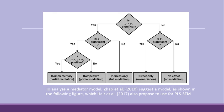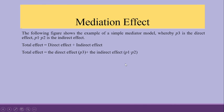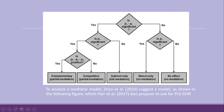To analyze the mediator model, Zhao et al. suggested the following flowchart. The first question is: are P1 and P2 significant? If yes, the next question is: is P3 (the direct effect) significant? If P1, P2, and P3 are all positive, it is known as partial mediation, also called complementary mediation. If the multiplication of P1, P2, and P3 is negative, it is known as competitive partial mediation.